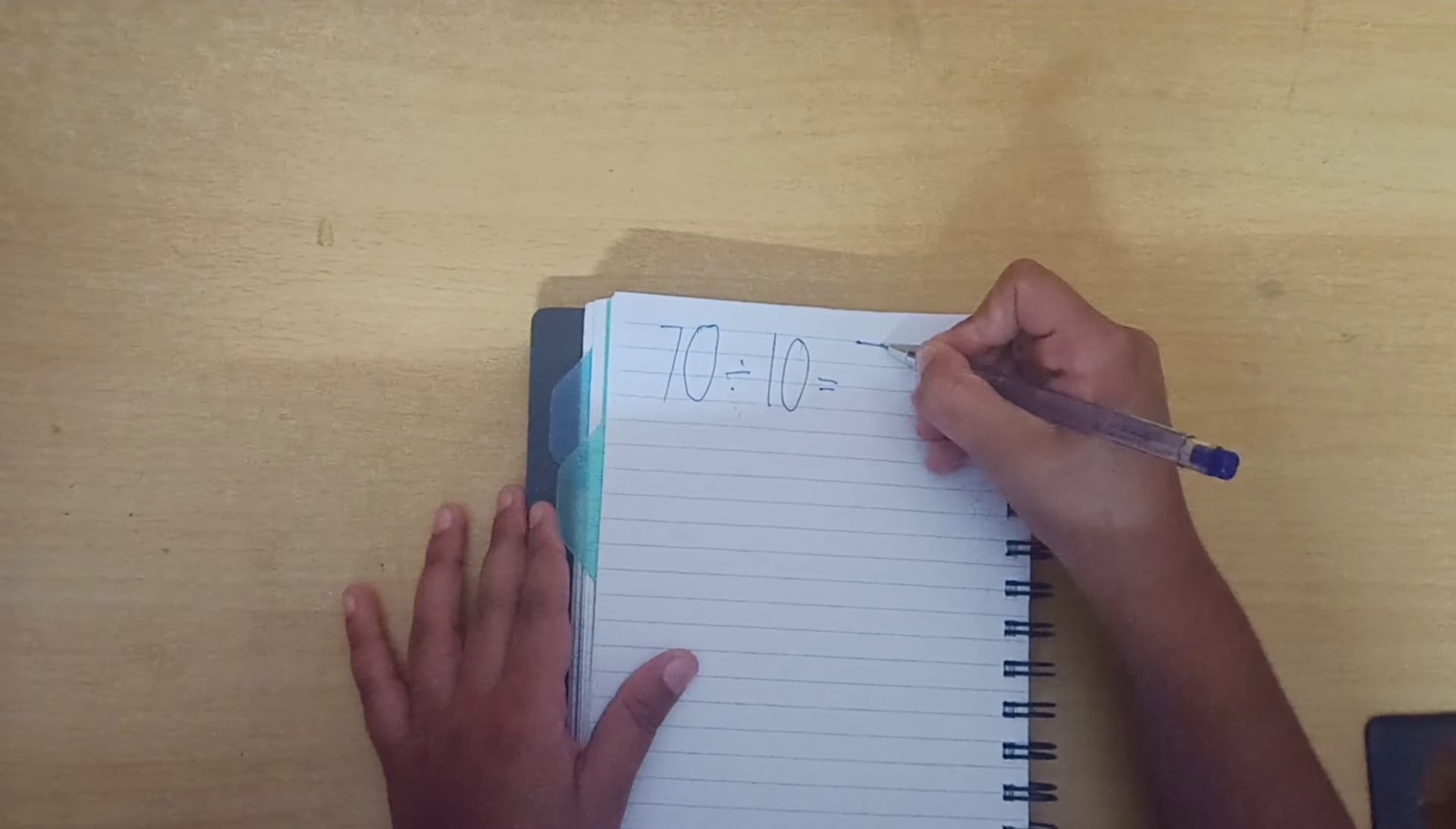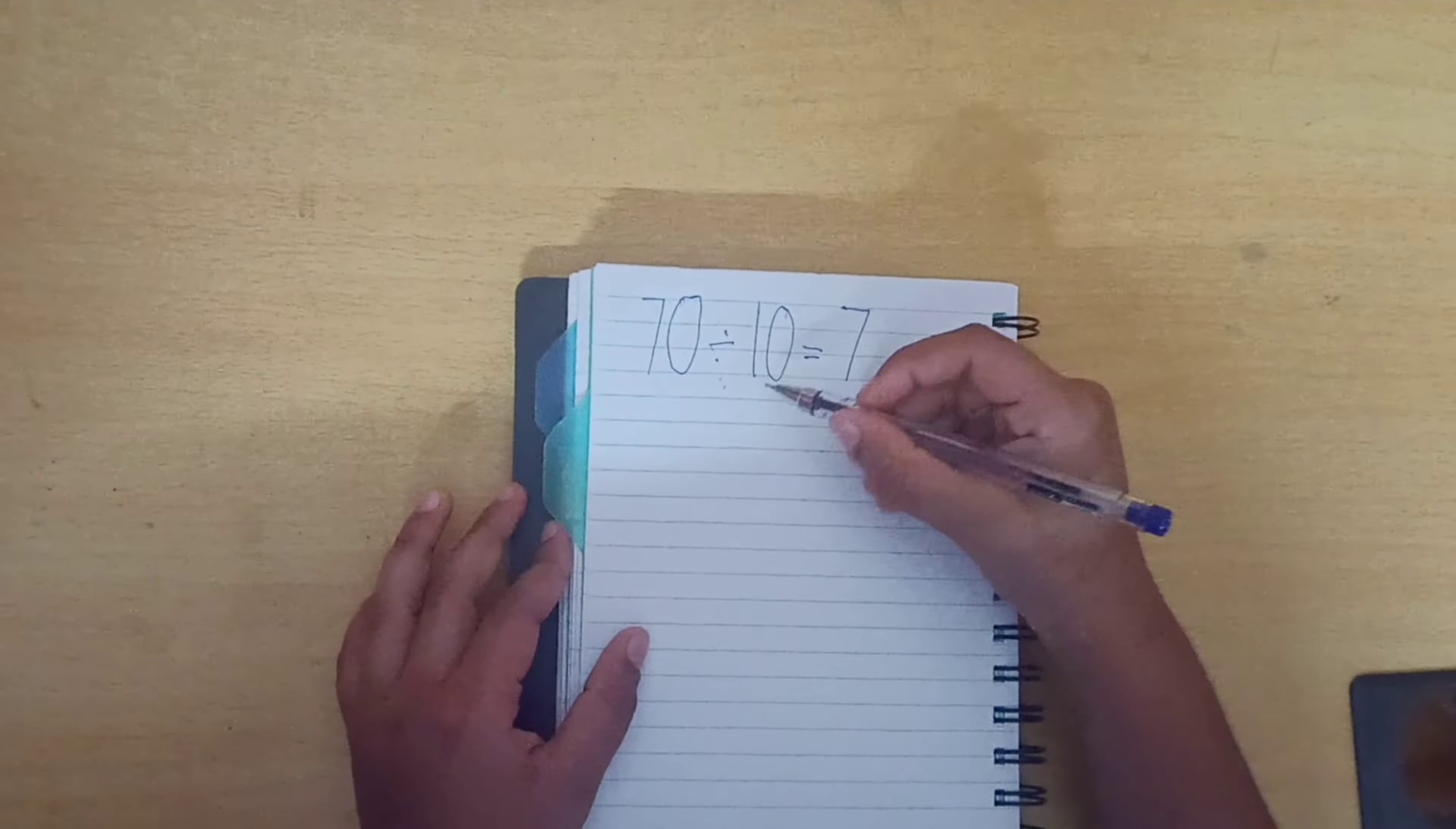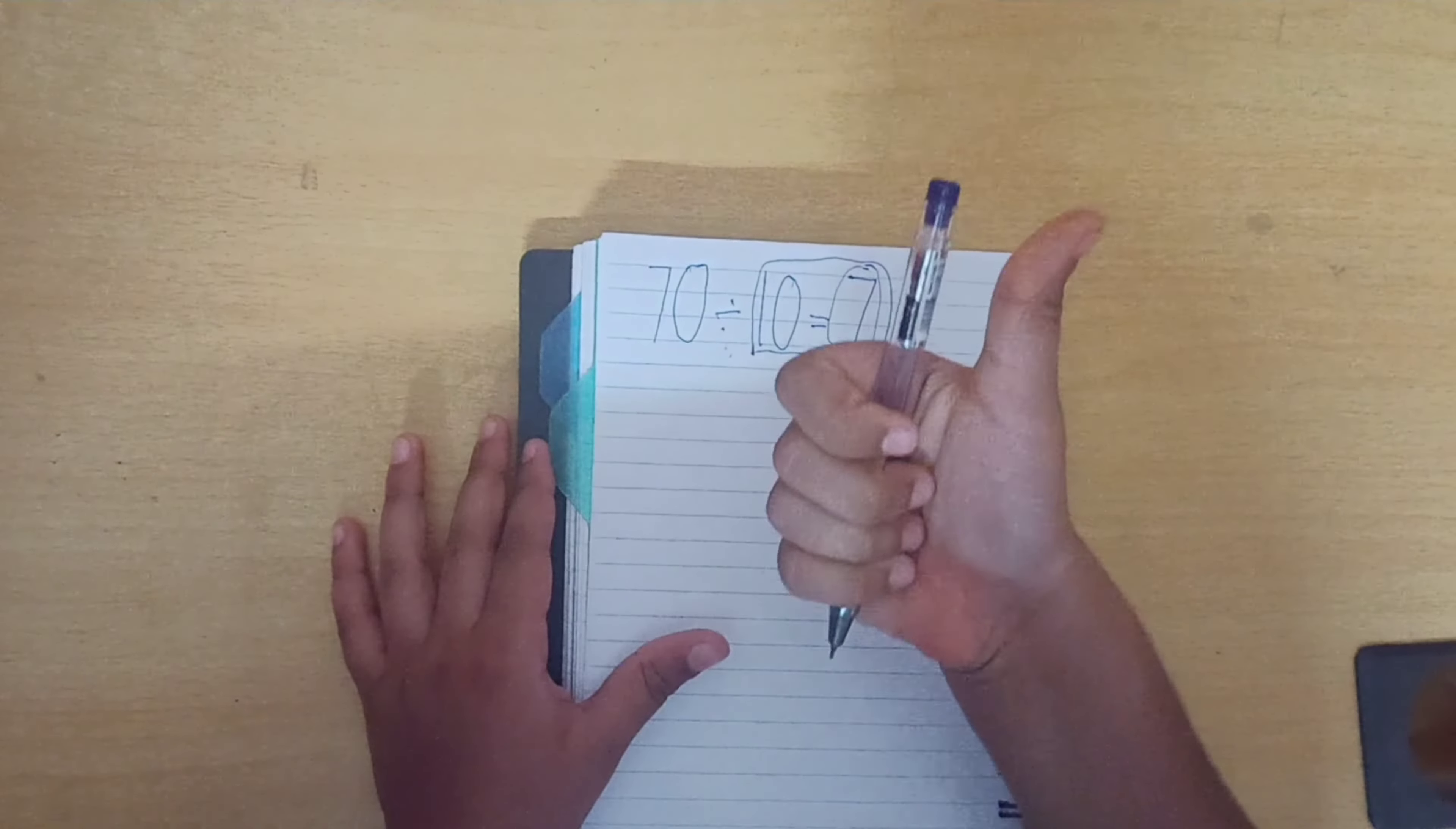Yes, the answer is 7. Why it comes? Yes, very good. Because 10 sevens are 70. So, the answer is 7. Very good.